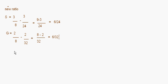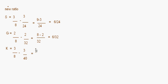For K, the old ratio was 3/8 minus the sacrificing ratio 3/40. Here the denominator is 40, so we get 15/40 minus 3/40, which equals 12/40.